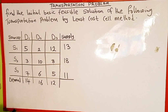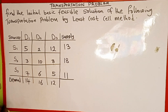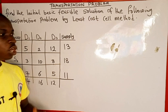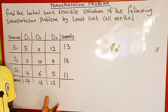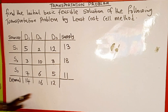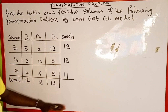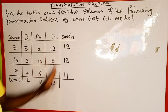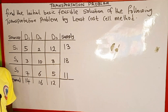Here we are given the source, destination, supply, and demand. The first thing we are going to check is whether this problem is balanced or unbalanced. If the sum of the supply is equal to the sum of the demand, the problem is balanced. If not, it is an unbalanced problem.